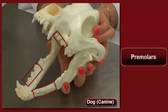Then you can see the premolars, which are the shorter and flatter teeth behind the canines. These are transitional teeth between the canines and the molars, and they're used for crushing food.